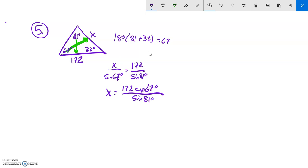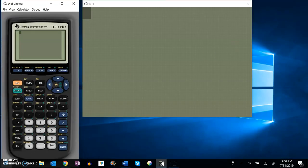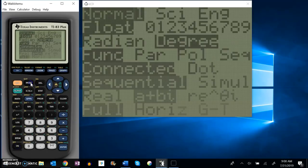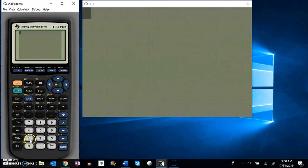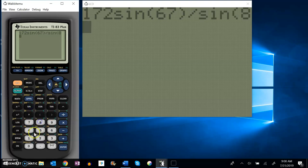And now that I can just put into my calculator. And I know that I am in degrees, yes. So 172 times the sine of 67 degrees. I'm going to close up those parentheses and then divide that by the sine of 81 degrees.